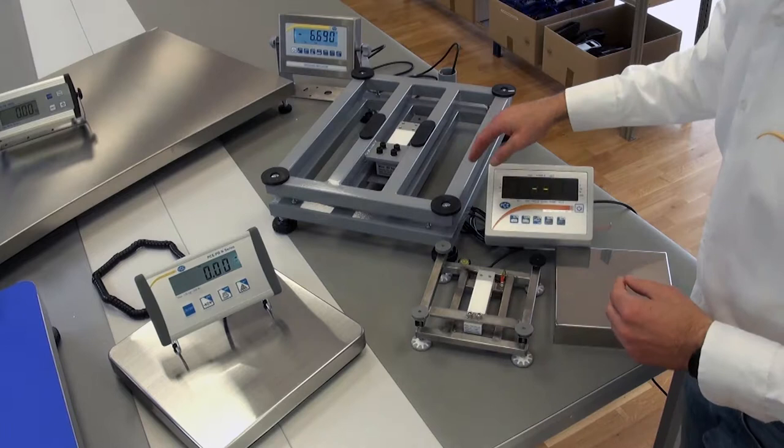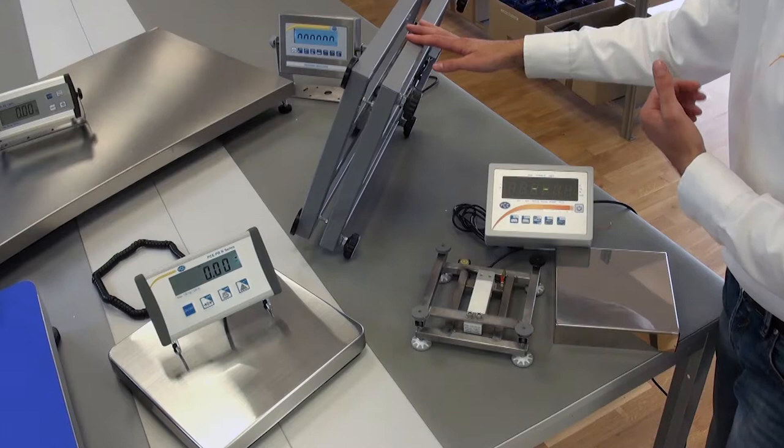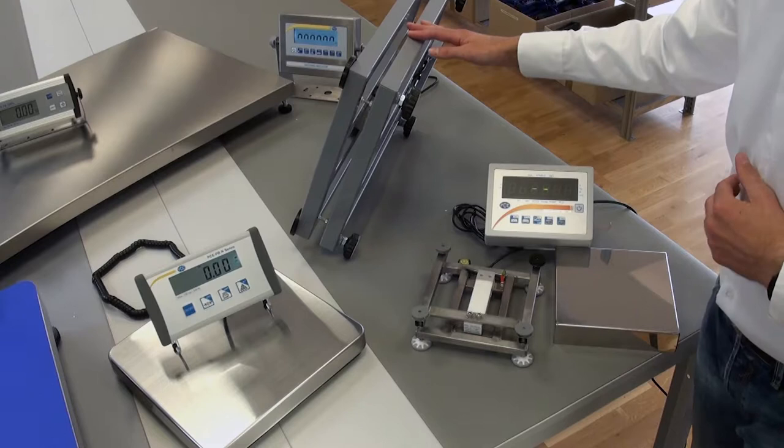The bottom carrier frame has the same task as the top carrier frame. It has to make sure that the force applied is stable and that the scale doesn't contort. Additionally we have here leveling feet to level out the scale at the place of work.